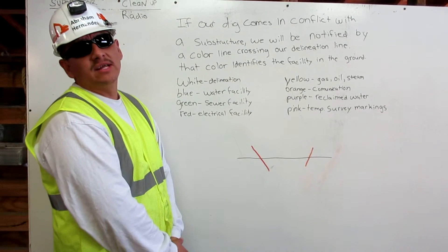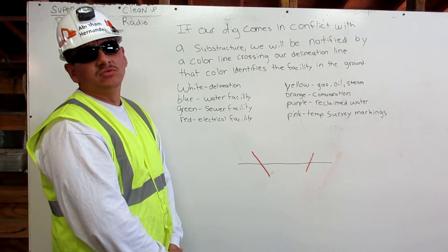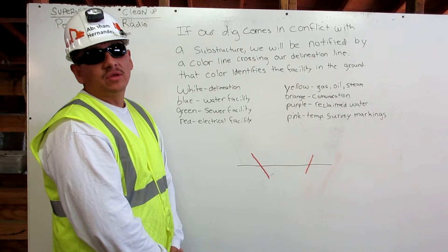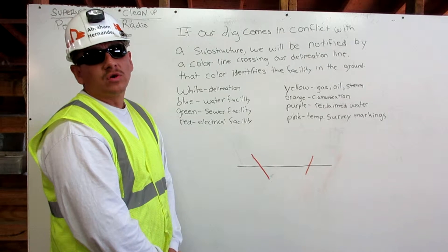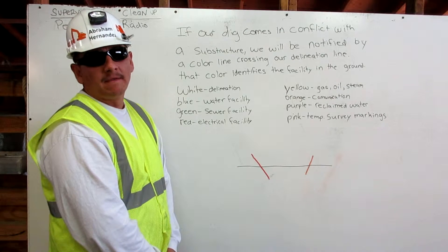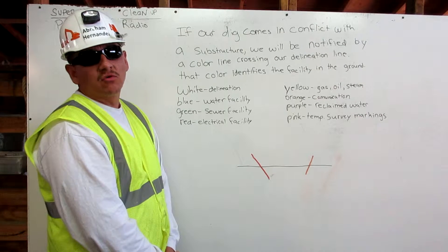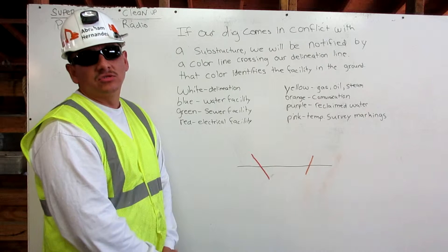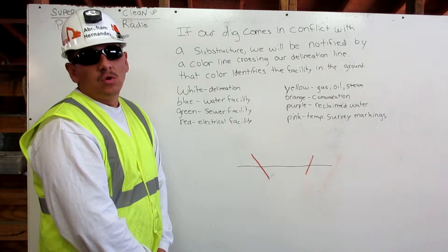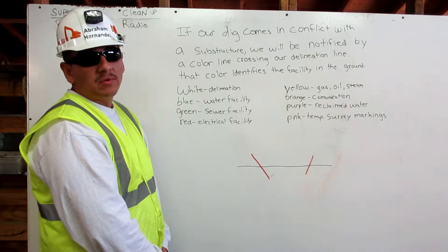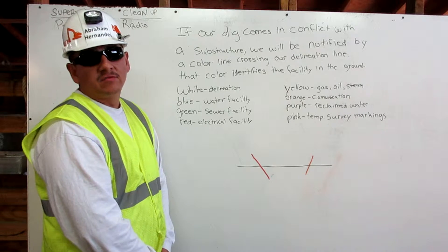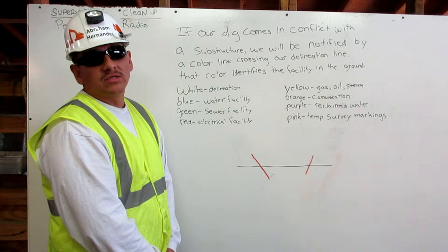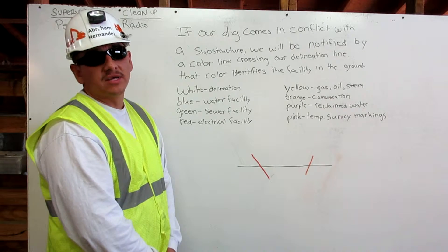A facility is a company that owns a substructure, like a pipe in the ground where we are going to dig. If our dig is going to come in conflict with an existing substructure, we will be made aware of it by a line of a specific color that will be crossing our delineation line.